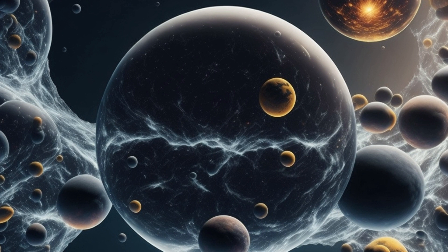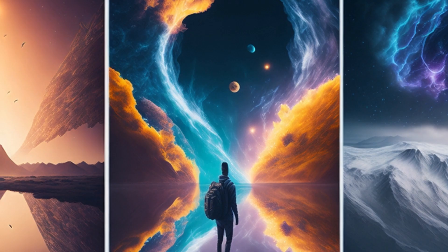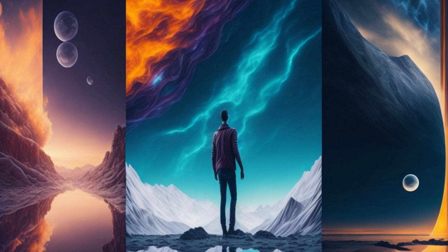Another fascinating aspect of the multiverse paradox is the idea of infinite iterations. Think about it. If every possibility exists, then there must be infinite versions of you spread across the multiverse. Some may have achieved great success, while others may have faced utter failure. It's mind-boggling to contemplate the endless variations and versions of ourselves that could exist out there.